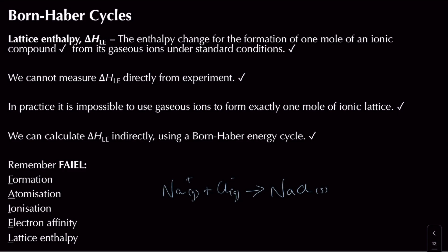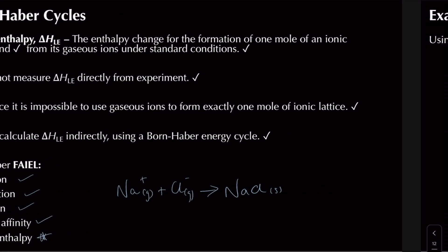To do this in the laboratory — to form exactly one mole of a solid ionic lattice — is actually pretty hard, next to impossible. So instead we can create something called a Born-Haber energy cycle and work out lattice enthalpy indirectly using Hess's law. To do this you need data on enthalpy of formation, atomization, ionization, and electron affinities — together you can calculate a value for lattice enthalpy.